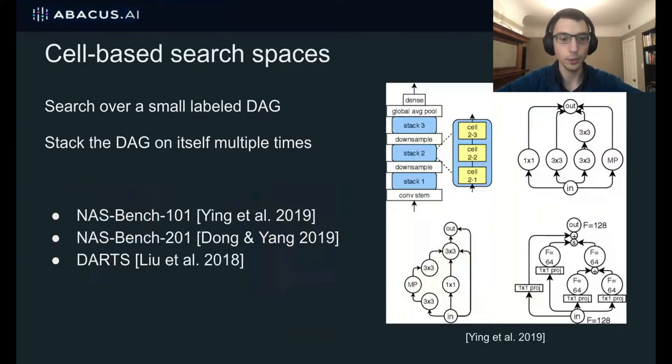In our experiments, we used three of the most popular cell-based search spaces: NASbench 101, 201, and the DARTS search space.